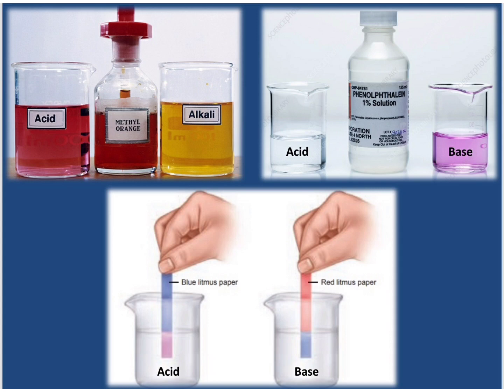In the second picture, the indicator present is phenolphthalein, which is colorless. When phenolphthalein is put into an acid it will continue to remain colorless — it will not change its color. But when phenolphthalein is put into a base it will make the entire solution pink in color. In the third picture, when a blue litmus paper is dipped into an acid the paper turns red, and when a red litmus paper is dipped into a base the paper turns blue.